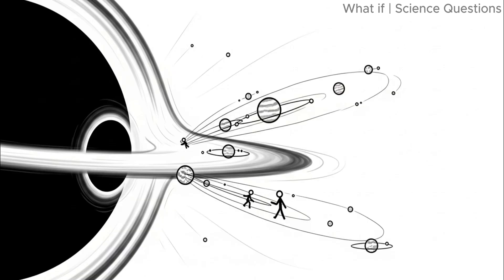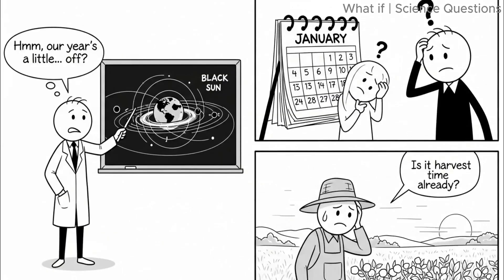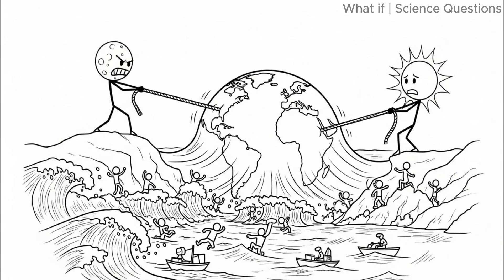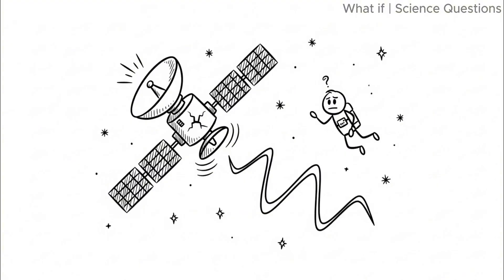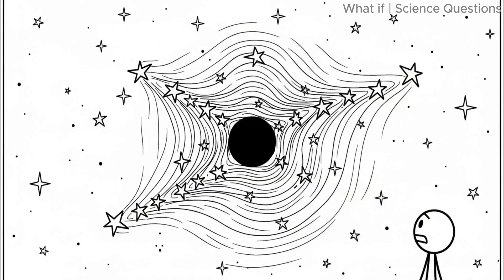As the black hole drew closer, its gravitational influence would become undeniable. Planets wouldn't immediately be torn apart, but their orbits would slowly stretch and distort. For Earth, the first effects might seem almost harmless. The length of our year could change slightly as the black hole's gravity tugs on our orbit. Tides would grow stronger and more unpredictable as the moon and sun's gravitational balance shifted. Satellites could malfunction due to unexpected orbital drifts. But soon, the skies would give away the danger.